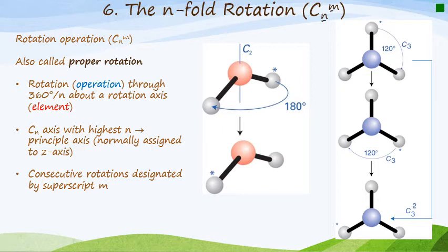So Cn is the axis with the highest n value. So for example, if we have C1, that means it's a 360 degree rotation, it will turn 360 degrees n is equal to one. And it's normally assigned to the z axis. And we then have consecutive rotations can be designated by the superscript m. Now, let me demonstrate for you.